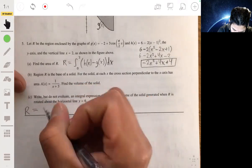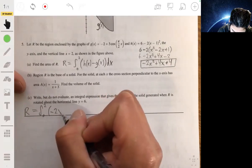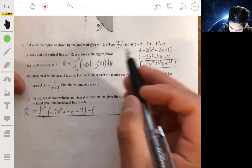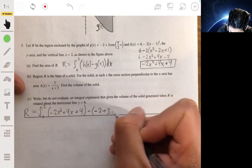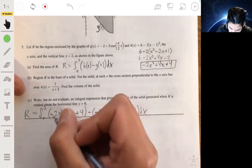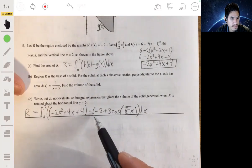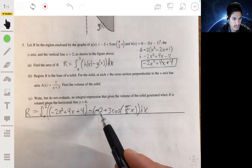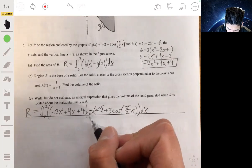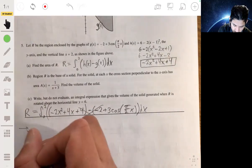So r would be equal to the integral from 0 to 2, h(x) would be that. So I'm going to have -2x² + 4x + 4 minus g(x), minus a -2 plus 3 cosine of π/2 x dx. So you can see that the 4 and the minus negative 2 make a 6.